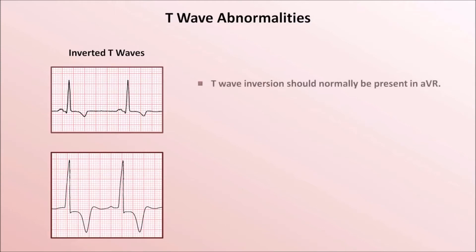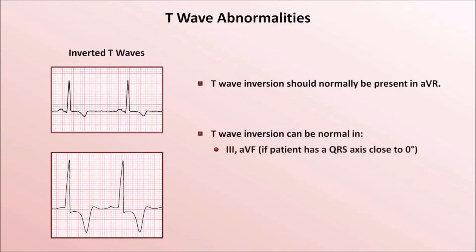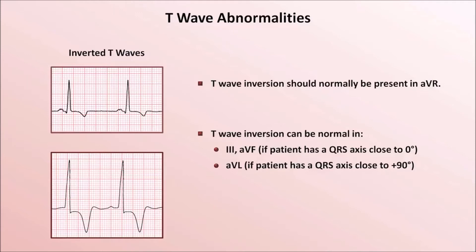First, the T wave in AVR should always be inverted. Second, T wave inversion can be normal in lead 3 and AVF if the patient's QRS axis is close to 0 degrees, also in AVL if the patient has a QRS axis close to positive 90. And T wave inversions can be present in V1 and V2.